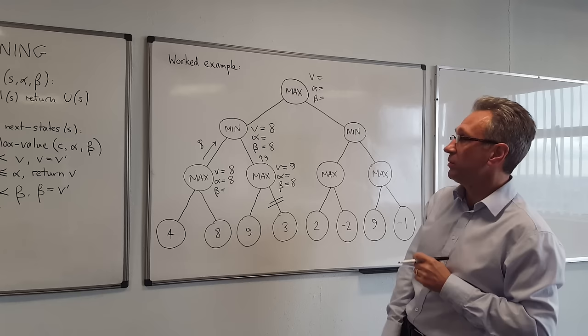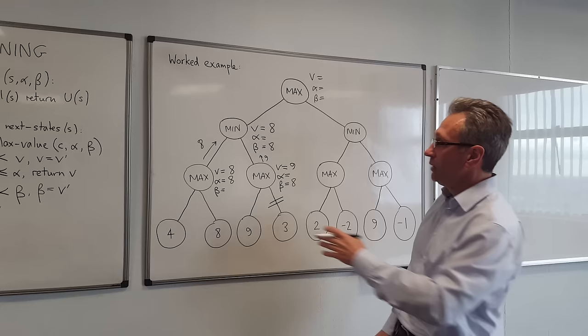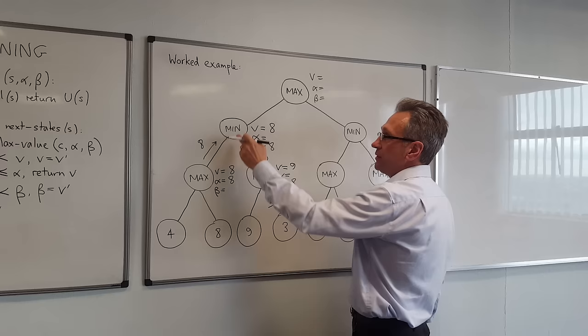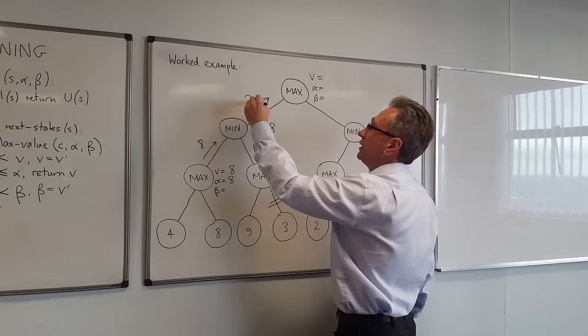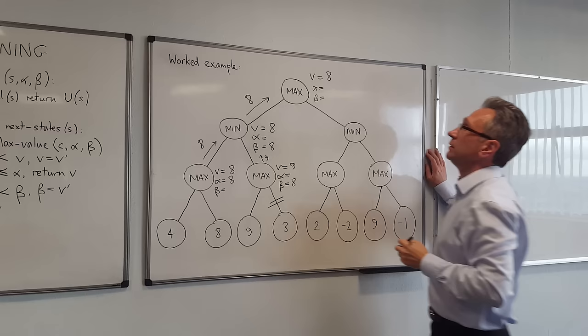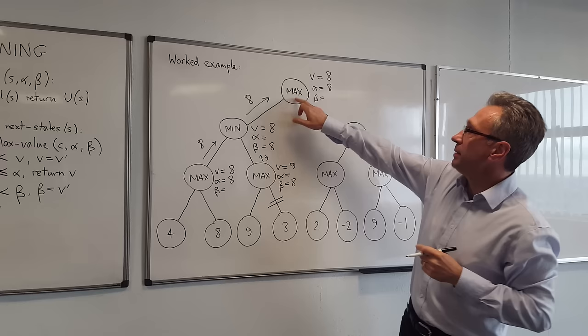We've now found the values of all children of this node. We've finished calculating MinValue for that node and can return the value, which is 8. So 8 gets returned to the top-level node — that becomes the value there. We check to see if we can prune, but we can't. We also update the value of alpha, and that tells us the best alternative we've found for Max is down there.